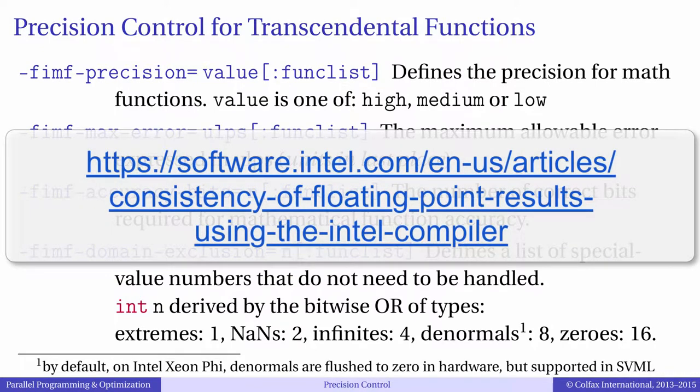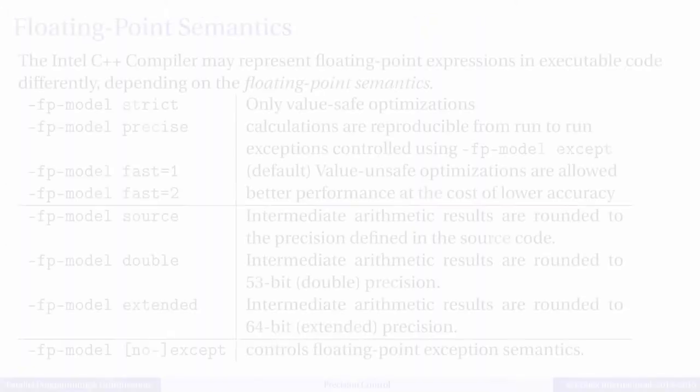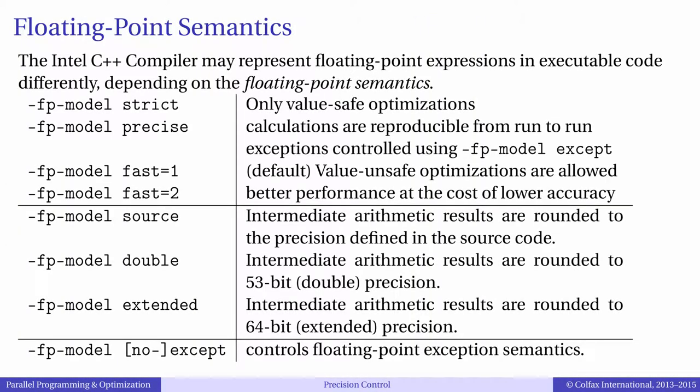Besides controlling precision, you can tune scalar math by controlling the rules that the compiler is allowed to use for automatic optimization of your arithmetic expressions. Those rules are called floating-point semantics. Four sets of semantics are available: strict, precise, fast 1, and fast 2, enabled by those compiler arguments.